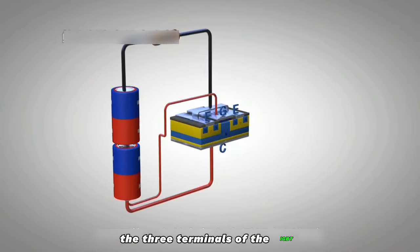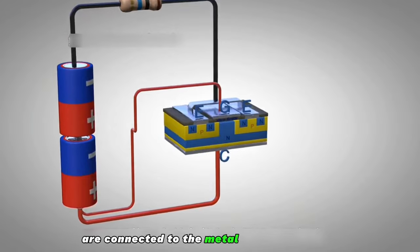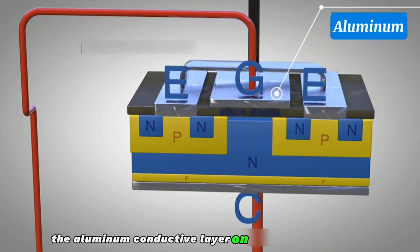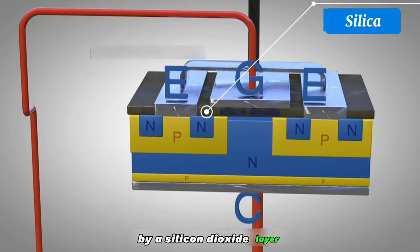The three terminals of the IGBT are connected to the metal conductive layer usually made of aluminum. The aluminum conductive layer on the gate is insulated by a silicon dioxide layer.